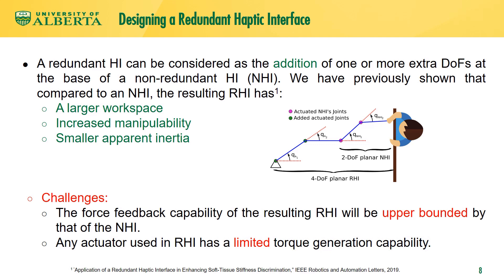An alternative solution addressed in this research is employing small actuators with low rotor inertia and friction in a kinematically redundant serial haptic interface design. However, small actuators have limited torque capability. Here, we propose to leverage the redundancy of the redundant haptic interface and redistribute the torque of overloaded joint actuators among available unsaturated actuators to enhance the force feedback capability.